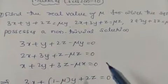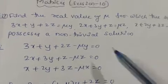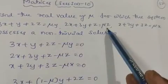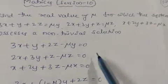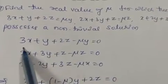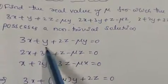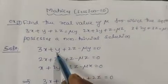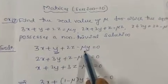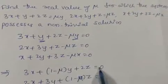First write the given equations, bringing the mu terms to the left side. In the first equation, these two terms contain y — take y common — so it becomes 3x plus (1 minus mu)y plus 2z equals 0.